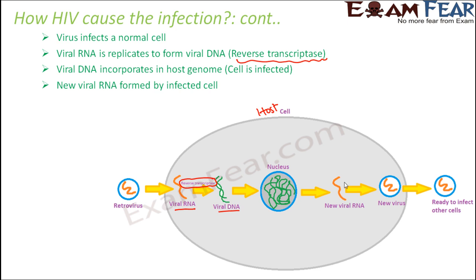From the new viral RNA, new viruses are formed and released out of the cell, ready to infect another cell. Multiple new viruses are formed because the viral DNA replicates inside the nucleus. Many new viral RNAs are formed, therefore many new viruses are formed, and this is how the infection spreads from one cell to multiple cells.